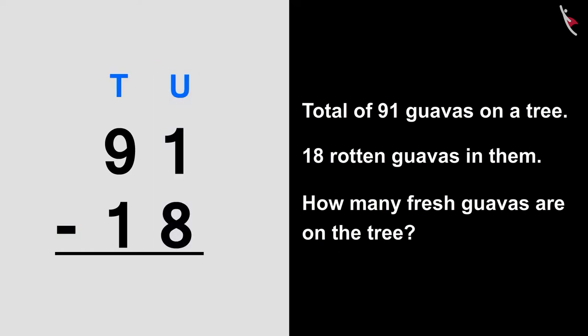First, we will subtract 1 and 8 from numbers in the units column. 1 is a number smaller than 8. So, we will borrow one number from the number written in the tens place. Now, 1 becomes 11.